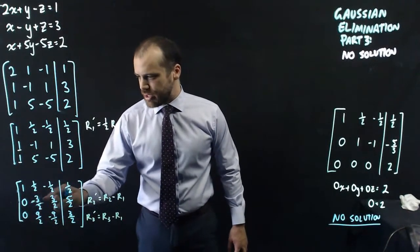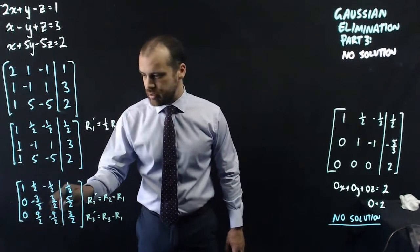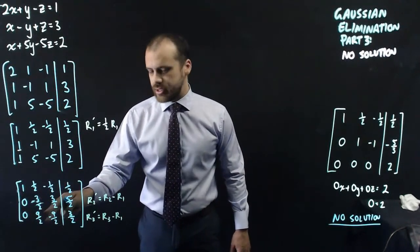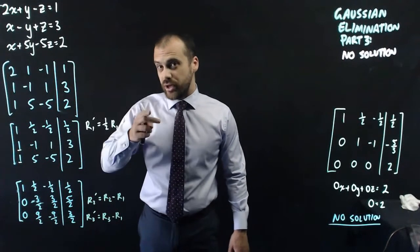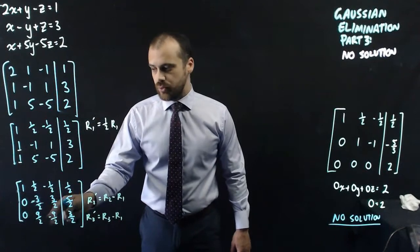Now, in order to do that, negative three over two times the reciprocal, two over three, is going to give me one, and multiplying this by the reciprocal of nine over two, which is two over nine, will give me a one there as well.